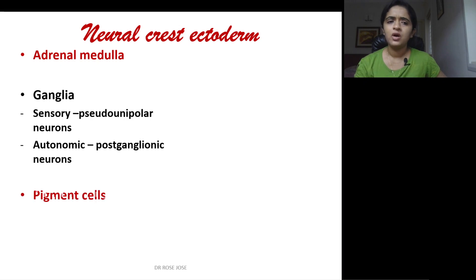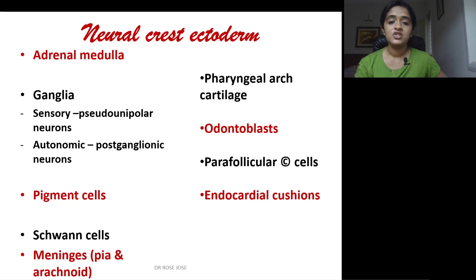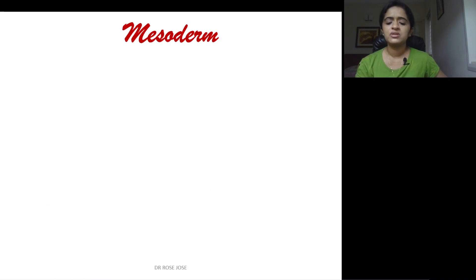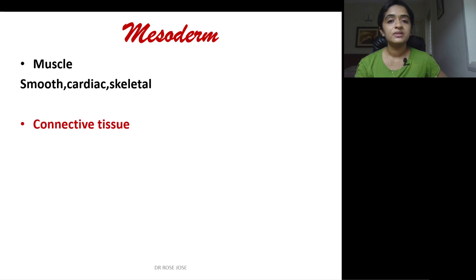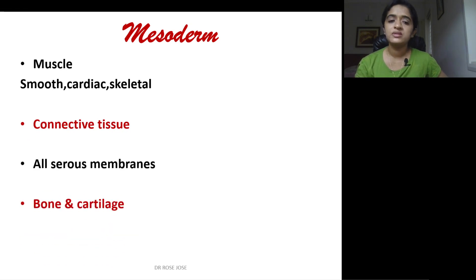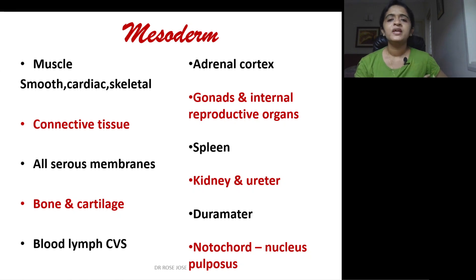Neural crest ectoderm gives rise to: adrenal medulla, almost all ganglia including sensory ganglia with pseudounipolar neurons, autonomic ganglia with postganglionic neurons, pigment cells, Schwann cells, pia and arachnoid mater, pharyngeal arch cartilage, odontoblasts, parafollicular C cells, and endocardial cushions. Mesoderm derivatives include smooth, cardiac, and skeletal muscle; connective tissue; serous membranes; bone and cartilage; blood; lymphatics; cardiovascular system; adrenal cortex; gonads; and internal reproductive organs.